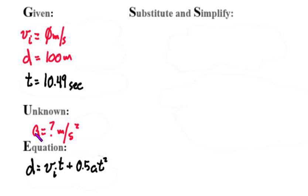All right, if we have these givens, this unknown, and this equation, then all we're actually asked to do is substitute and simplify. So I'm going to replace numbers for letters, and I know that d is 100 equals velocity initial is 0.